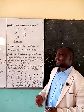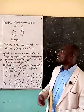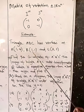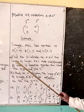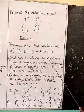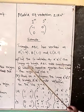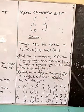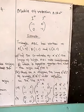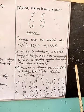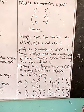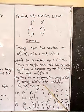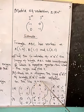We want to look at an example on matrix transformation. You may be given a matrix problem where triangle ABC has vertices A(1,4), B(1,1), and C(3,1). Part A: find the coordinates of triangle A', B', and C', the image of triangle ABC under a negative quarter turn about the origin, and plot it. Part B: show on the diagram the image A'', B'', C'' of triangle A'B'C' under a reflection on the line y = x.